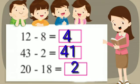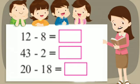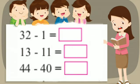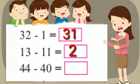8 minus 6 is equal to 2. 20 minus 18 is equal to 2. 32 minus 1 is equal to 31. 13 minus 11 is equal to 2. 44 minus 40 is equal to 4.